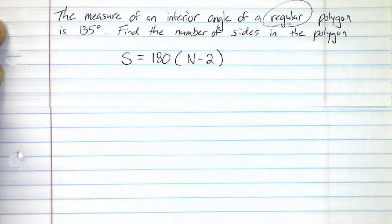Now, we don't know the sum of the interior angles, but we do know that each interior angle is going to be 135 degrees. And however many sides there are, that's how many interior angles there are.